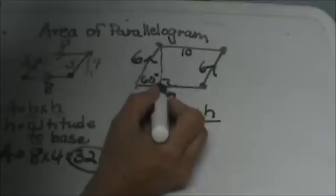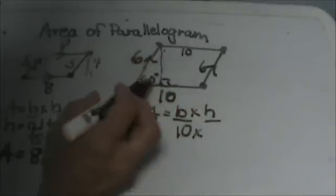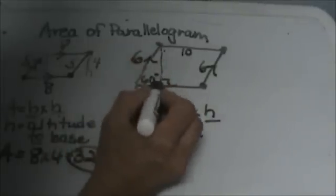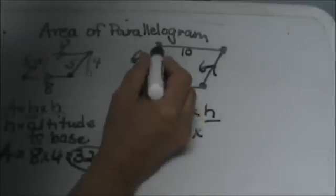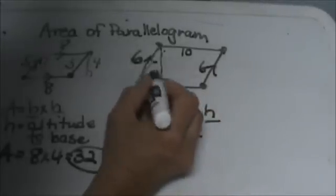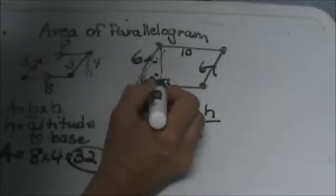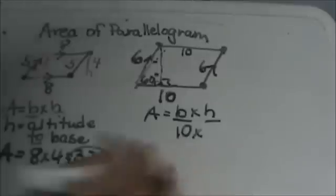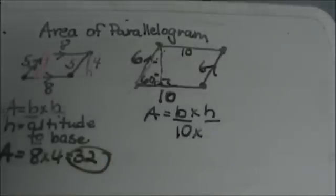So I'm connecting one vertex straight down. Notice I have a triangle over here. This triangle is a right triangle. It's a 30-60-90 right triangle. So I can use my 30-60-90 rules.